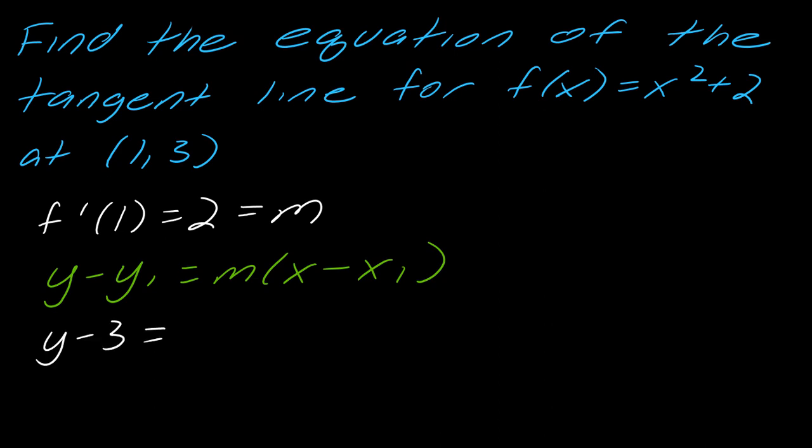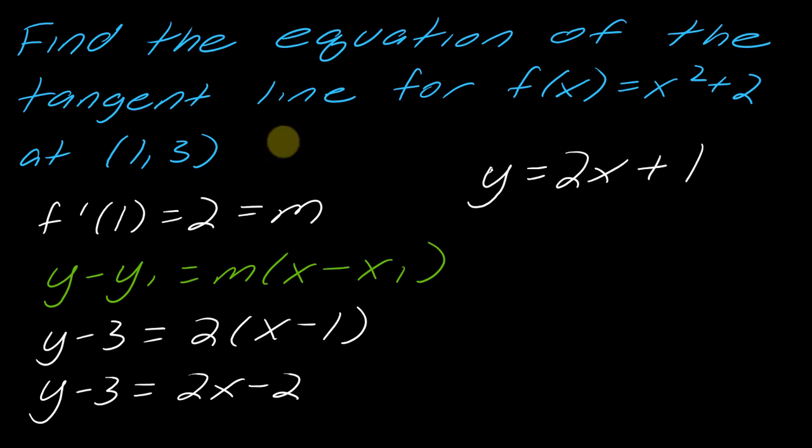So I'm going to go ahead and plug in everything into this, and I'm going to put this into slope-intercept form. So this becomes, let's see, this is 2x - 2, and then if I add 3 to each side. So my tangent line is given by 2x + 1. So this is the equation of the tangent line then.